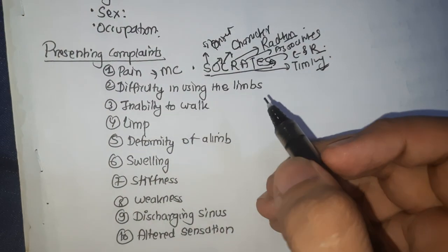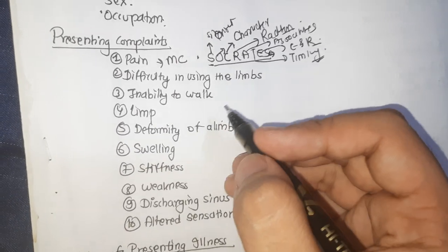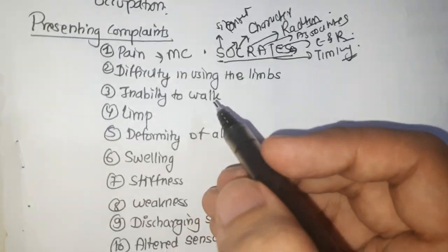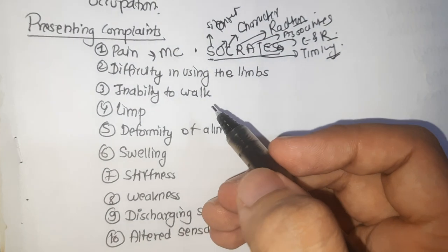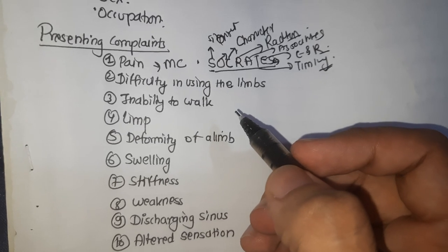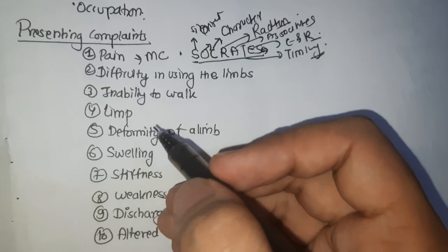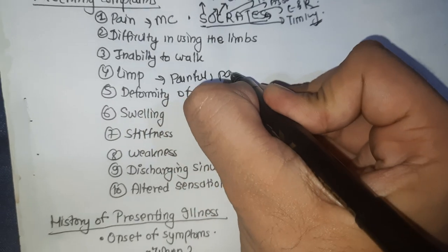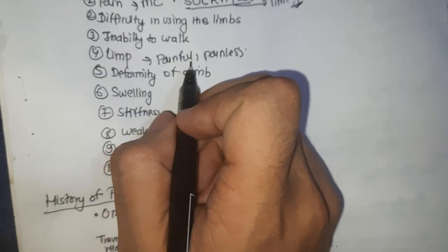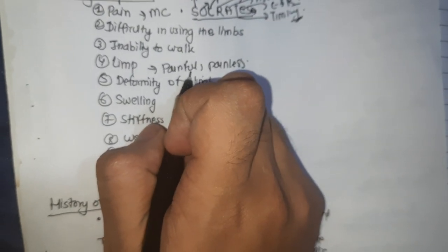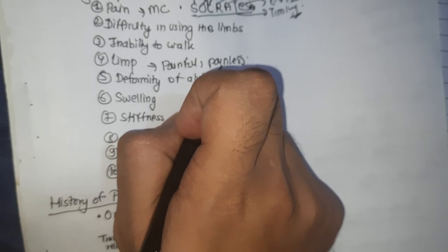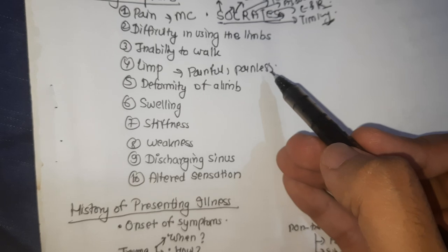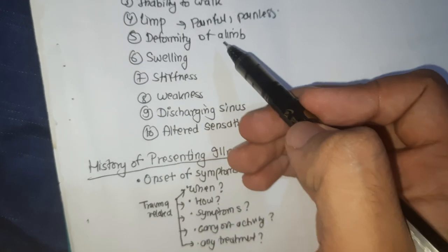Difficulty in using the limbs is usually a result of pain, and sometimes stiffness of joint, deformity, or muscle weakness may be responsible, especially for the upper limb. Inability to walk may be due to pain, and it is important to know at what rate the disease has progressed to cause walking limitation. Limping is a common symptom in patients with lower limb disease. Limping is of two types: painful and painless. Painful limp is present in traumatic conditions, inflammatory conditions like tuberculosis of hip, and osteoarthritis of hip. Painless limp is present in conditions like polio, coxa vara, DDH deformity, and fused hip, knee, or ankle.